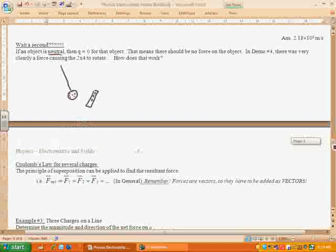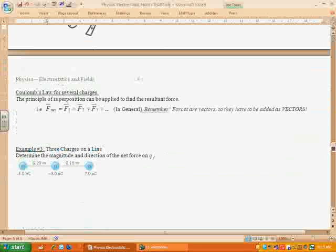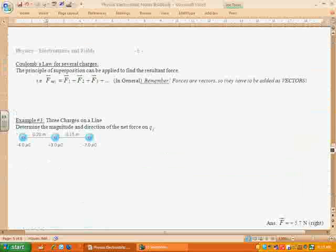Now, let's go ahead and look at Coulomb's law for several charges at the same time. So, this one is going to deal with three charges. And then we'll put those together. Let's look at example number three. Three charges on a line. So, we've got a negative four microcoulomb charge, a positive three microcoulomb charge, and a negative seven. It gives us the distances between those charges.